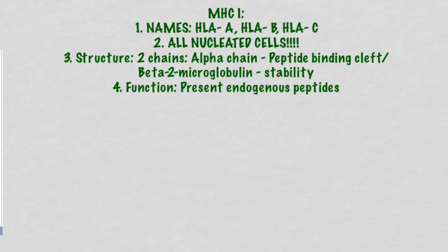The names of the MHC class 1 molecules are HLA-A, HLA-B, and HLA-C. You can remember this by noting that MHC class 1 molecules are named with one letter. There are others found during development or in lower concentrations — HLA-E, F, and G — but the main ones are A, B, and C. Tissue distribution for class 1 is simple: all nucleated cells, every single one. Even platelets, which are fragments of nucleated cells, have MHC class 1 molecules. The only cells that don't express MHC at all are mature red blood cells, your erythrocytes, because they are non-nucleated.